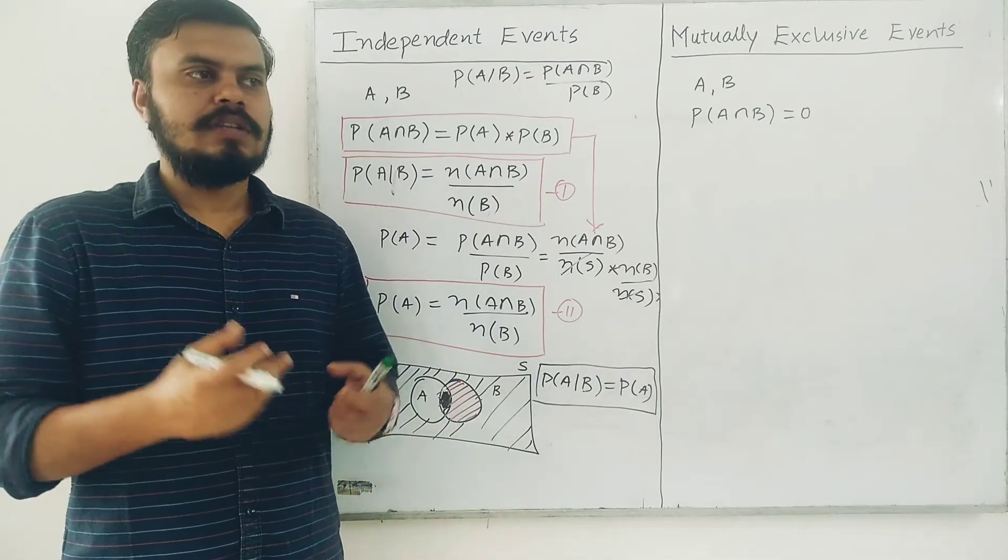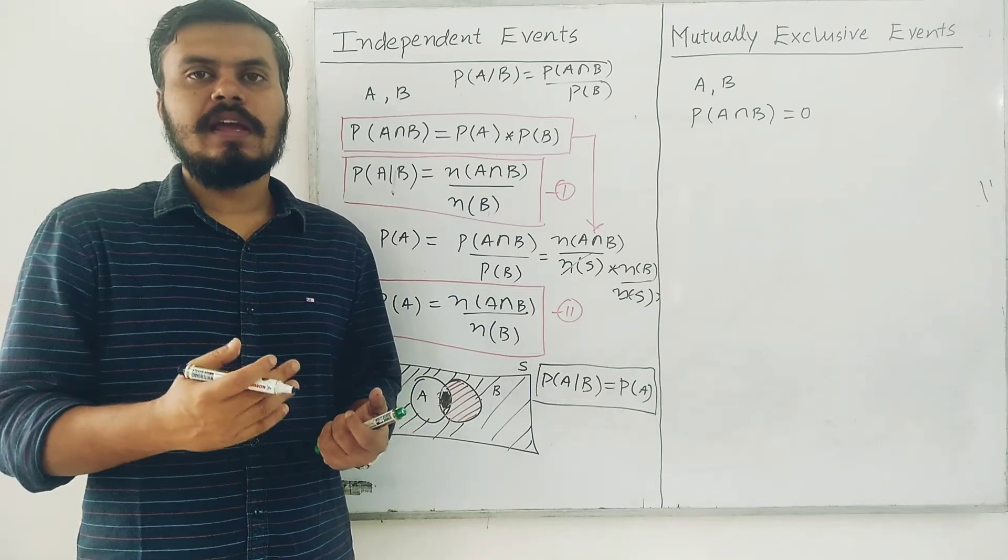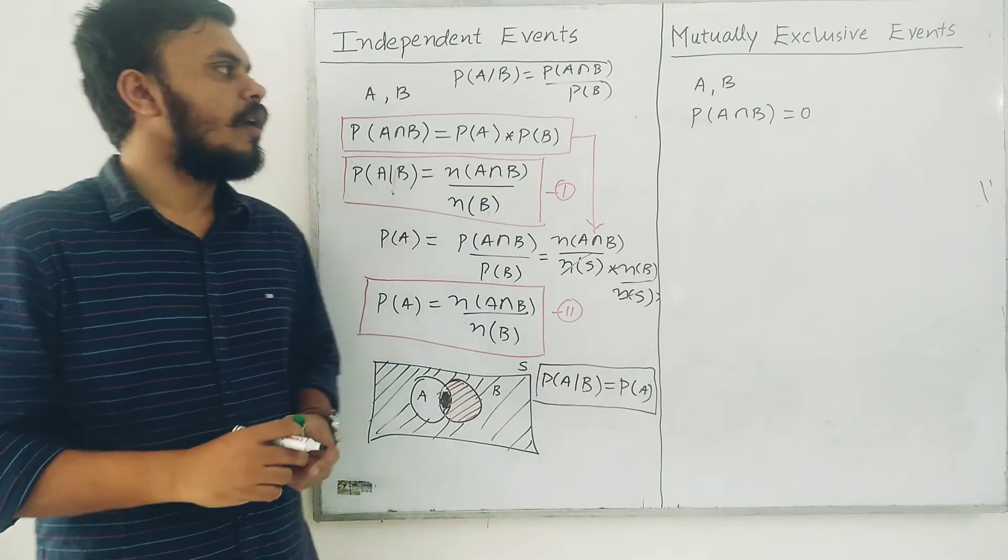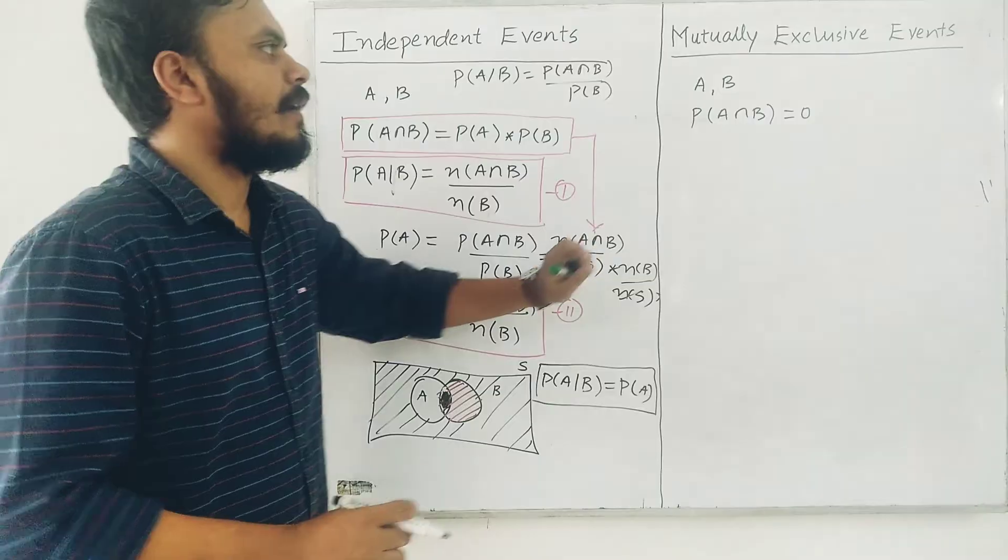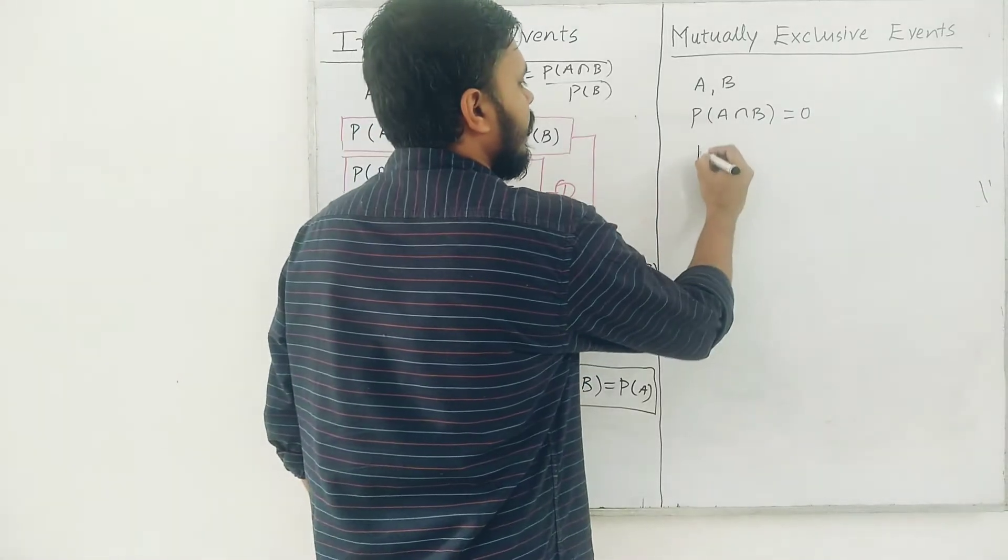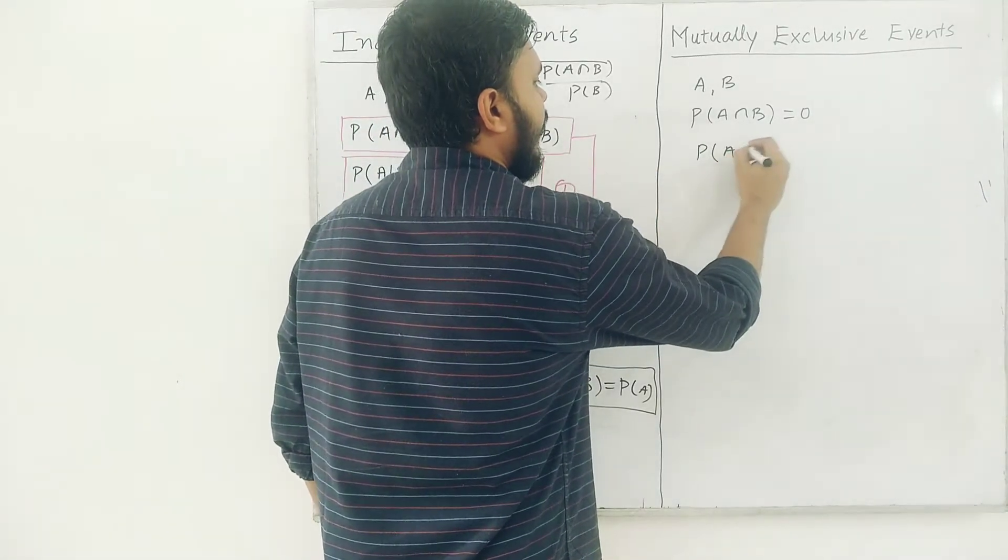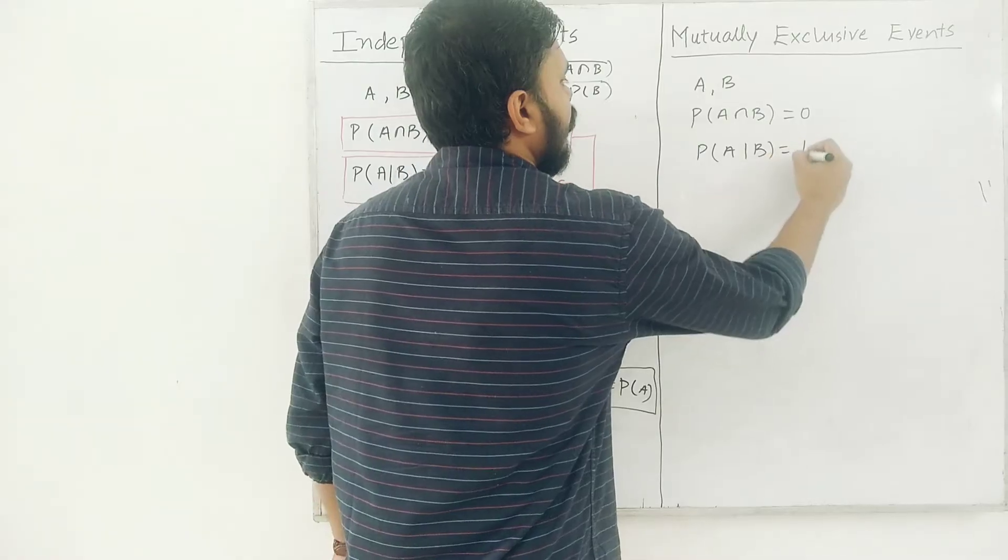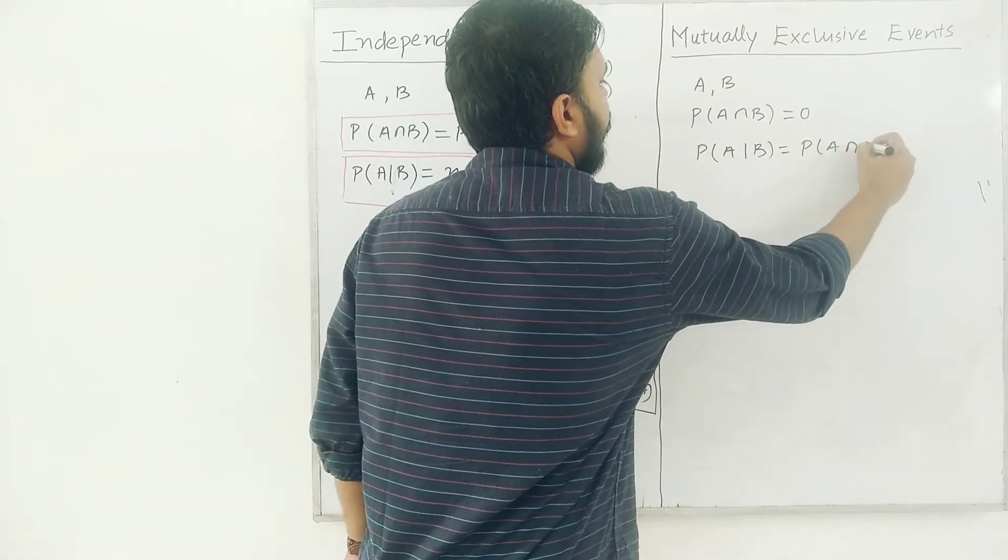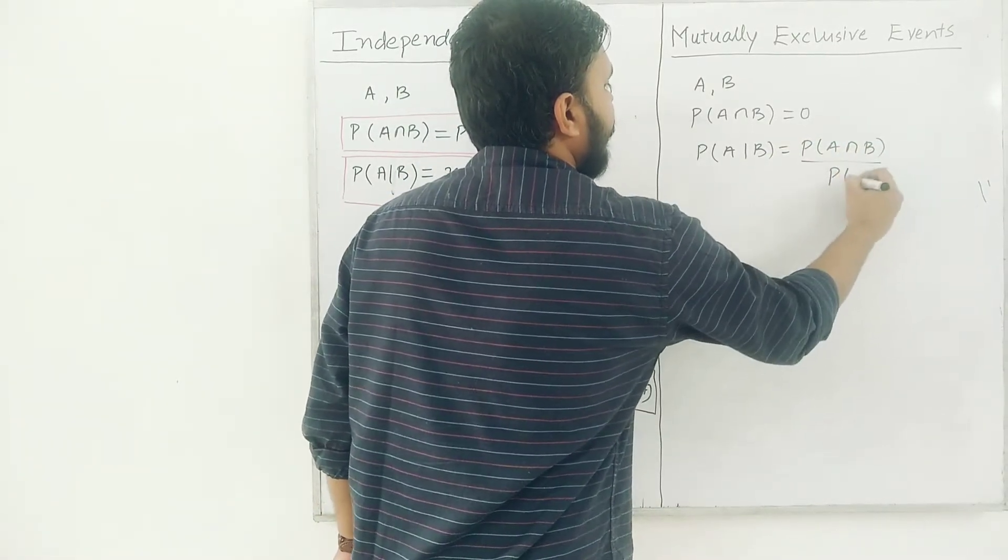So these events are known as mutually exclusive events. And if you put this formula P(A given B), you already know that this is equal to A intersection B divided by P of B.